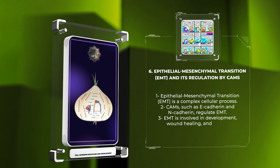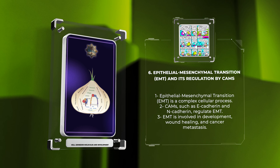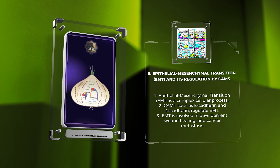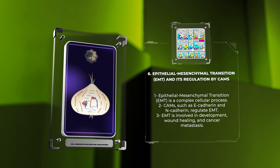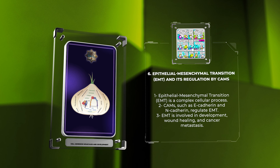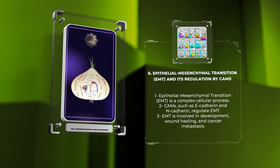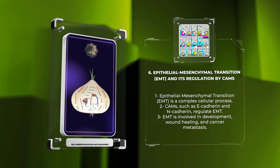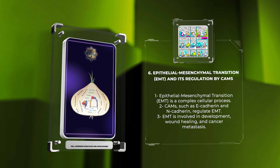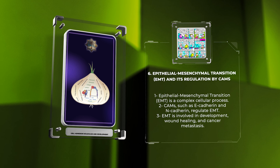Epithelial-mesenchymal transition (EMT) is a complex cellular process wherein epithelial cells lose their cell-cell adhesion and acquire a migratory and invasive mesenchymal phenotype. CAMs such as E-cadherin and N-cadherin play a critical role in regulating EMT. Reduction in E-cadherin expression and upregulation of N-cadherin enhance cellular plasticity during development, wound healing, and cancer metastasis.